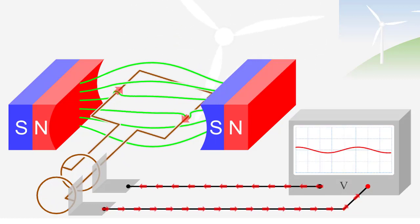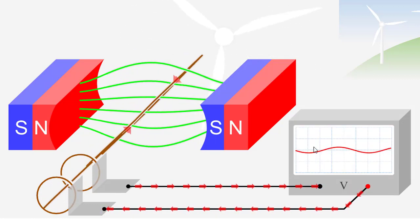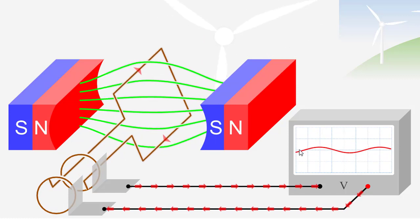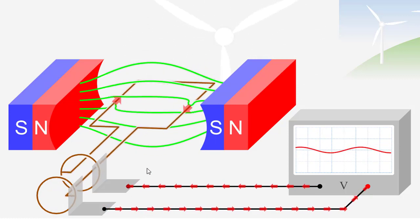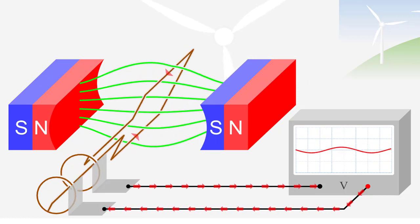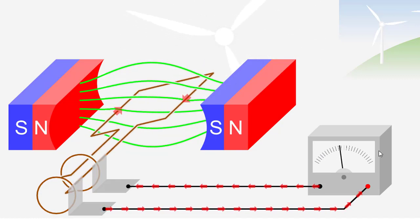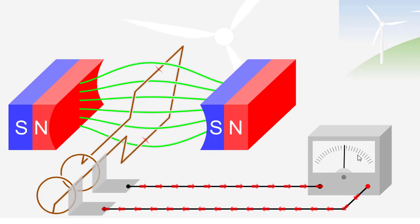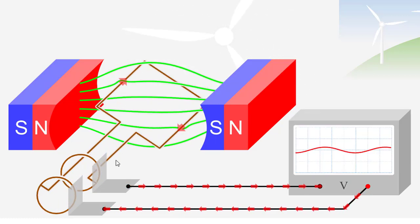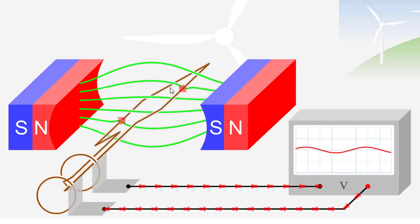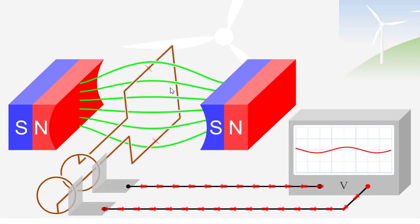Here we can see in the oscilloscope, this is the sine wave, or also we can see in galvanometer. This is called the generation of alternating voltage.